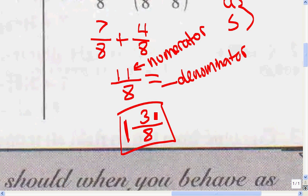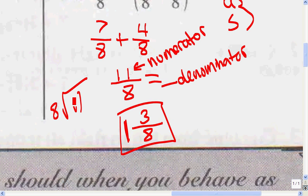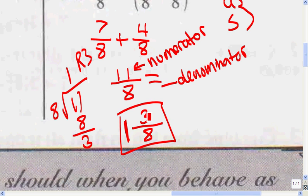That's how I turn an improper fraction into a mixed number. Let me explain again: how many times does 8 go into 11? What's 11 divided by 8? If I put a 2, it would go over 11, so it has to be 1. 1 times 8 is 8, and the difference between 11 and 8 is 3, so 3 is my remainder. My remainder is also my new numerator, and the denominator — which is 8 — stays the same.